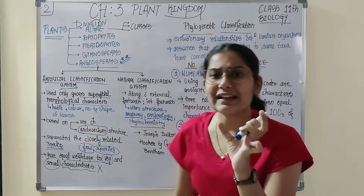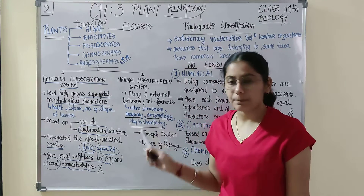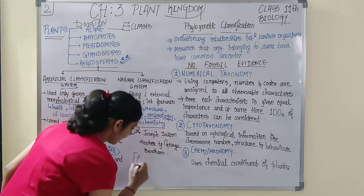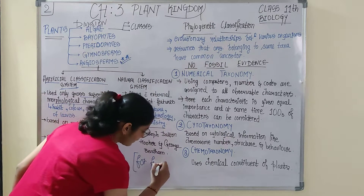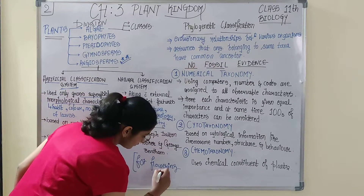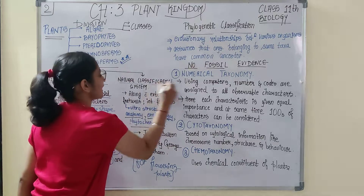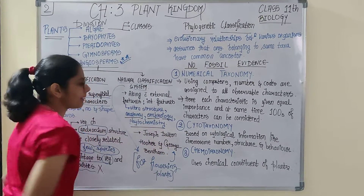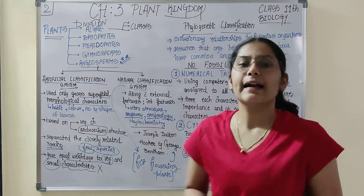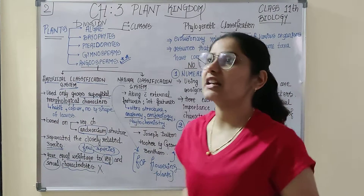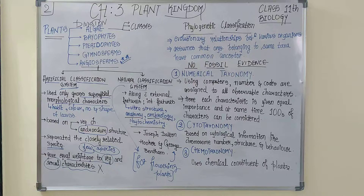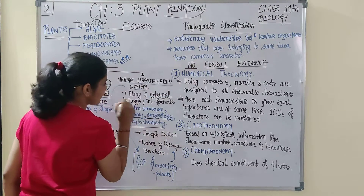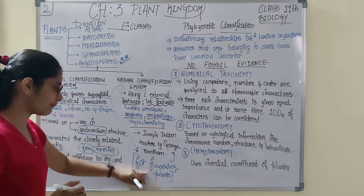Such a classification system — the natural classification system for flowering plants — was given by Joseph Dalton Hooker and George Bentham. These two scientists provided a natural classification system on the basis of external features as well as internal features.